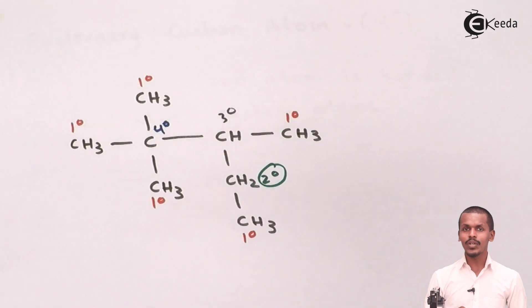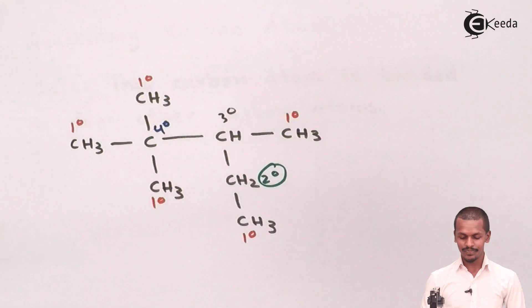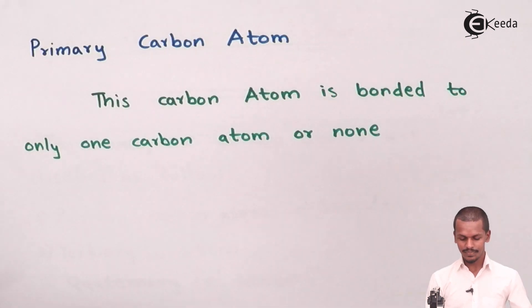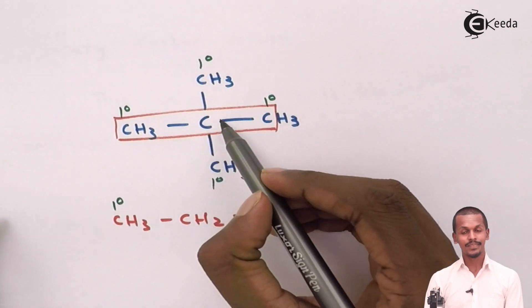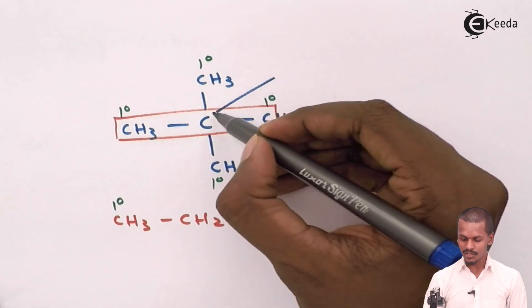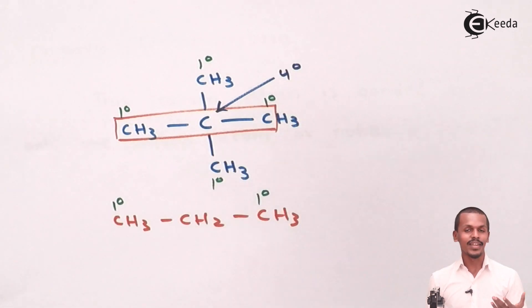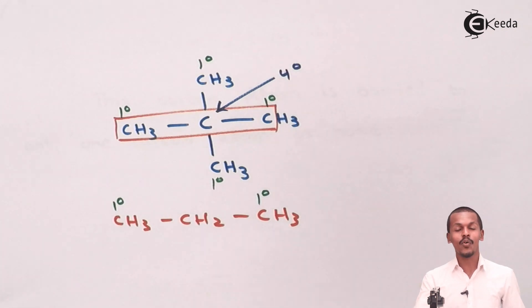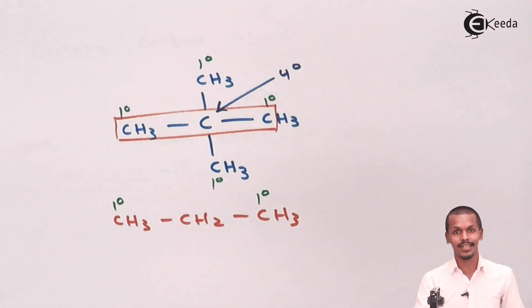This is also the example we used when discussing the primary carbon atom earlier, where the central carbon is attached to four different carbon atoms, making it a quaternary carbon atom. This is how we discussed the types of carbon atoms in alkanes. I hope you understood clearly. Please share this video with your friends and don't forget to subscribe. Thank you so much.